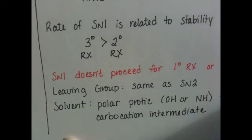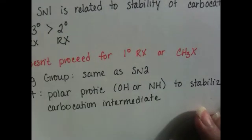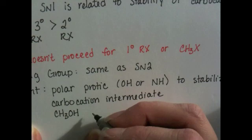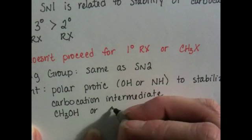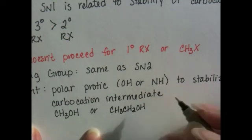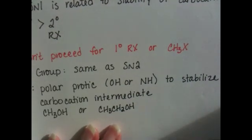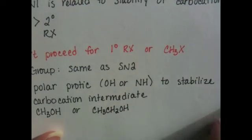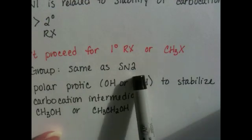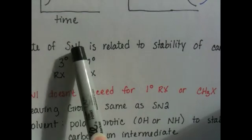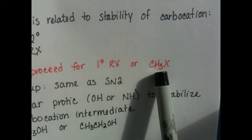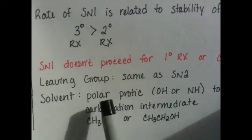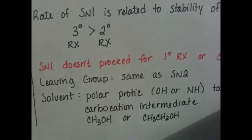Alcohols are usually used as solvents for SN1 reactions — examples include methanol or ethanol, which both work as good solvents. So to summarize the clues for determining SN1 vs. SN2: first look at the alkyl halide structure — tertiary means SN1, primary or methyl means SN2, and secondary could go by either. Then look at the solvent — a polar protic solvent points to SN1, and a polar aprotic solvent points to SN2.